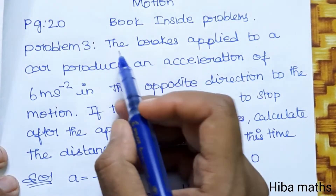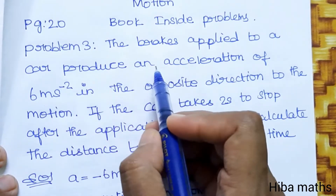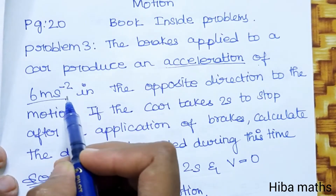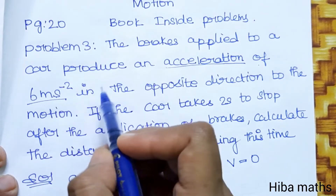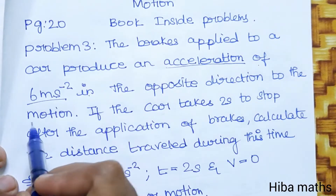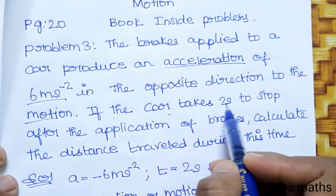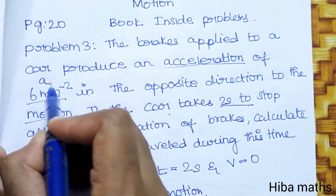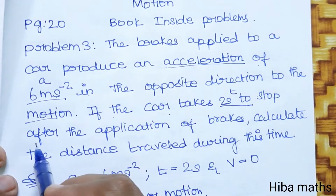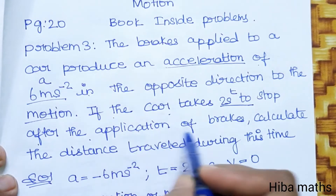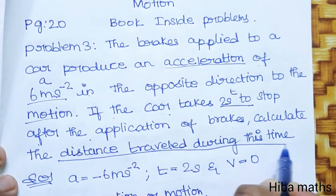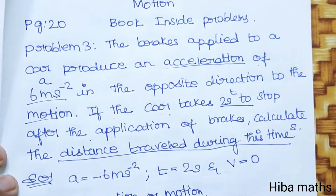Question: The brakes applied to a car produce an acceleration of 6 meters per second squared in the opposite direction to the motion. If the car takes 2 seconds to stop after the application of brakes, calculate the distance traveled during this time.